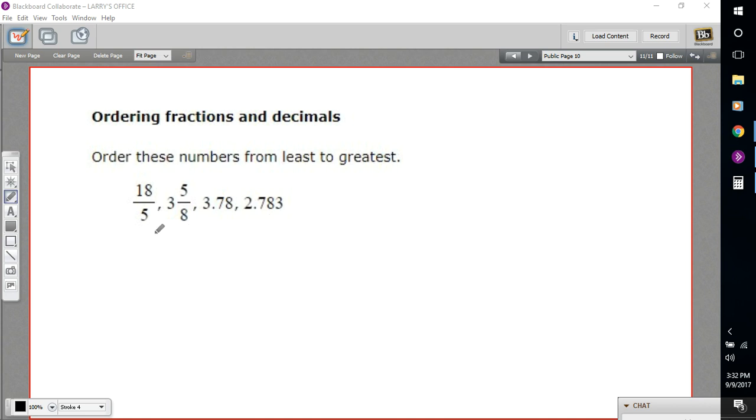In this problem, we have some fractions, one as an improper fraction, one as a mixed number, and then we have some decimals, and we're being asked to put them in order from smallest to greatest, from least to greatest.